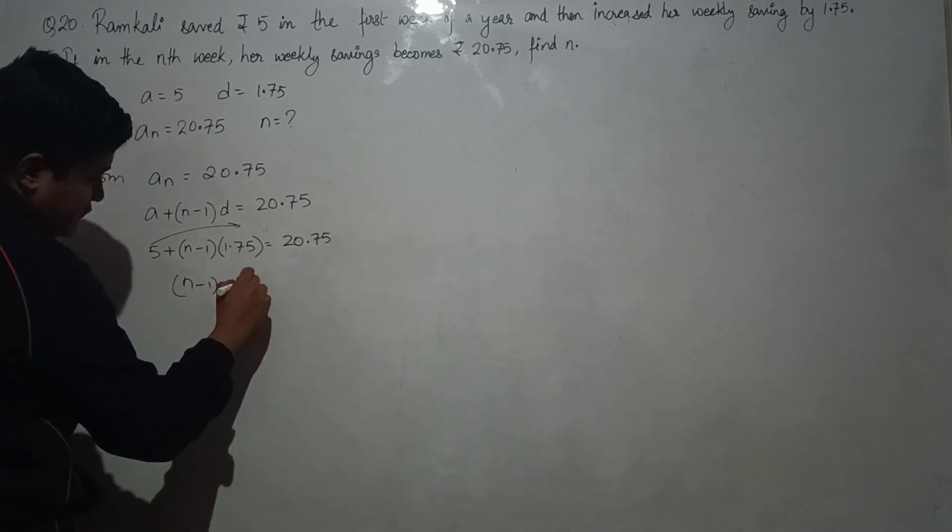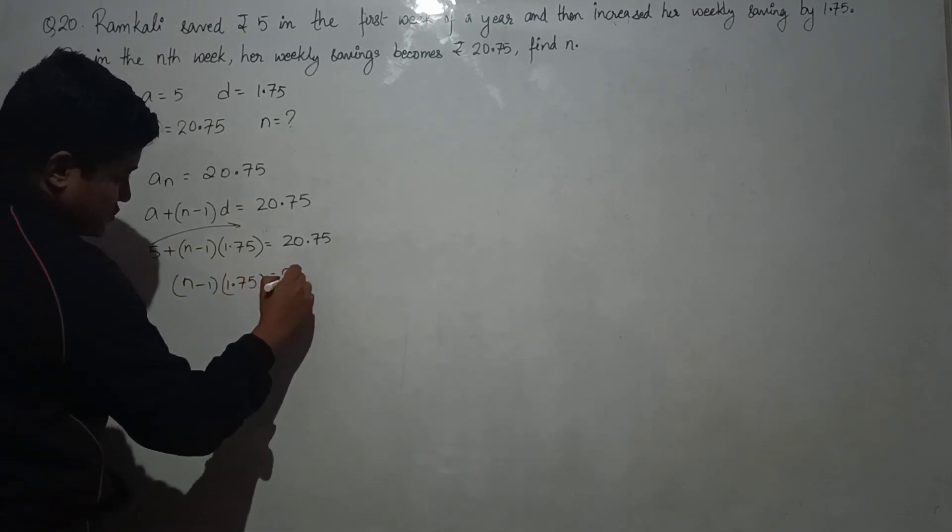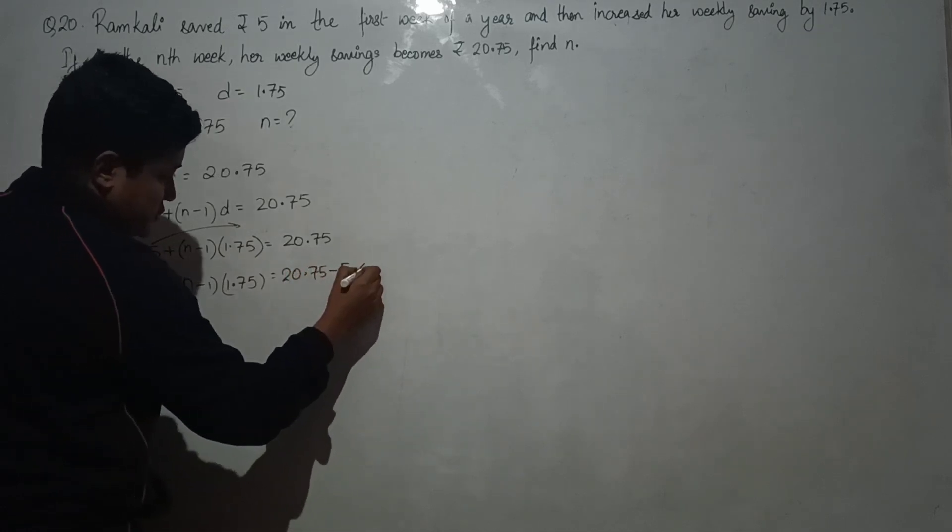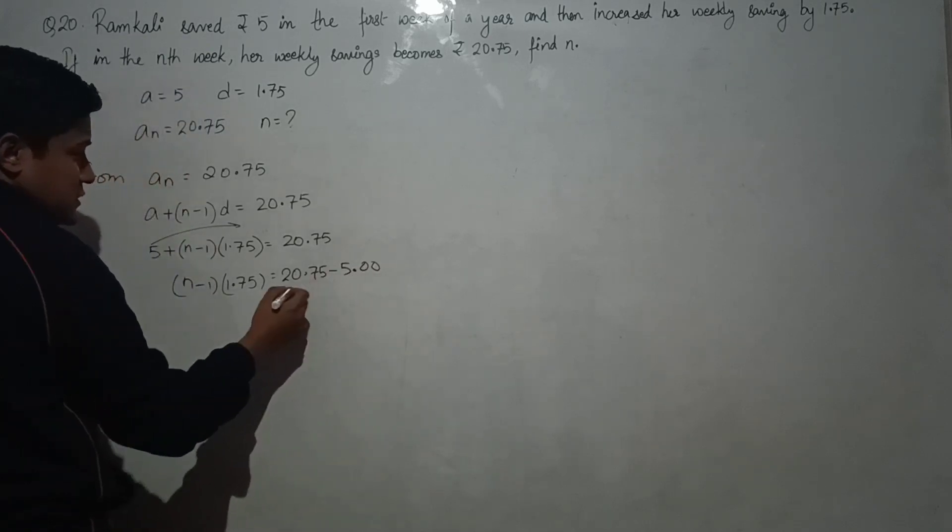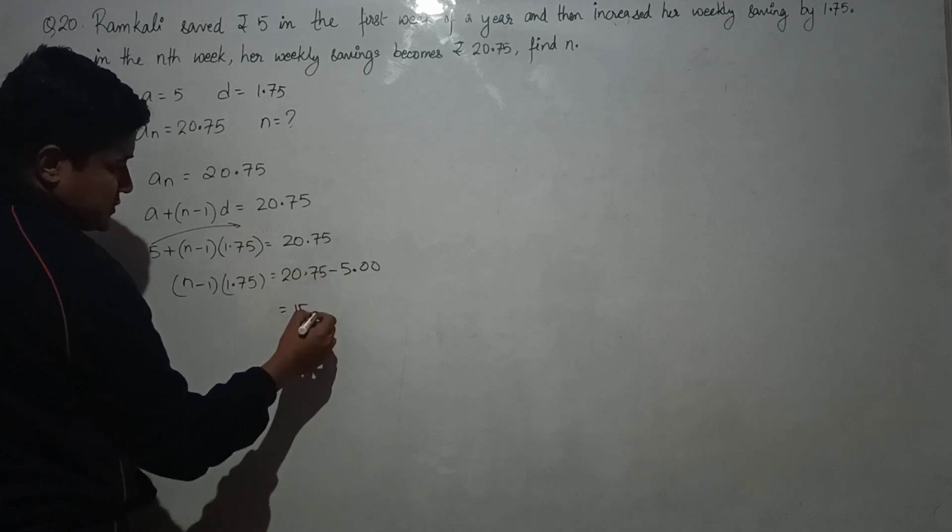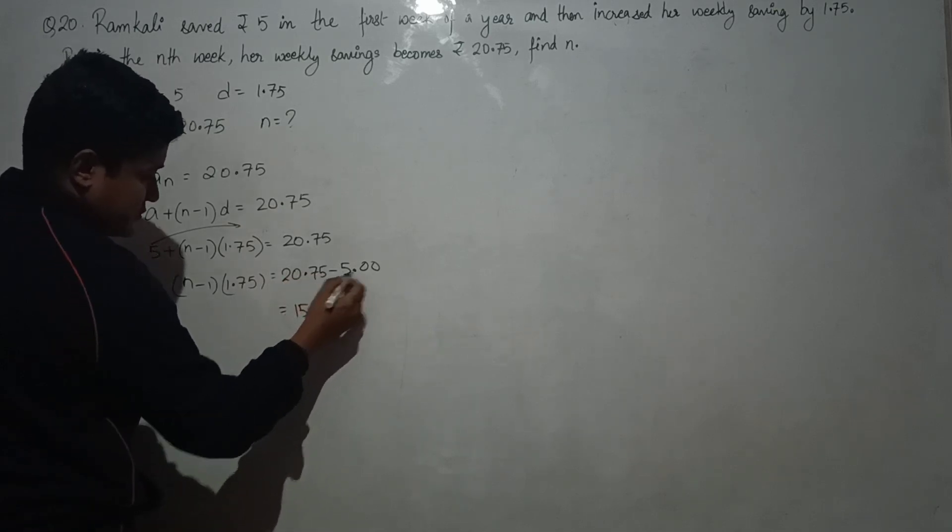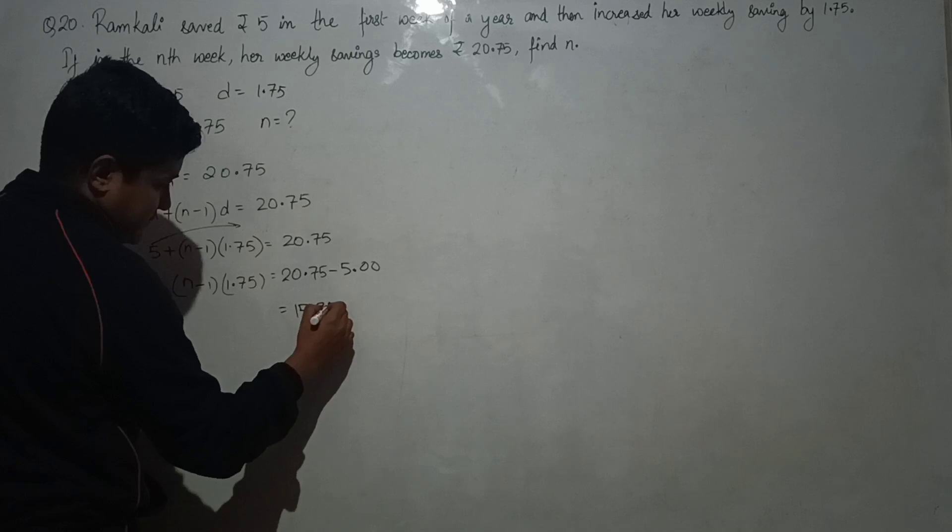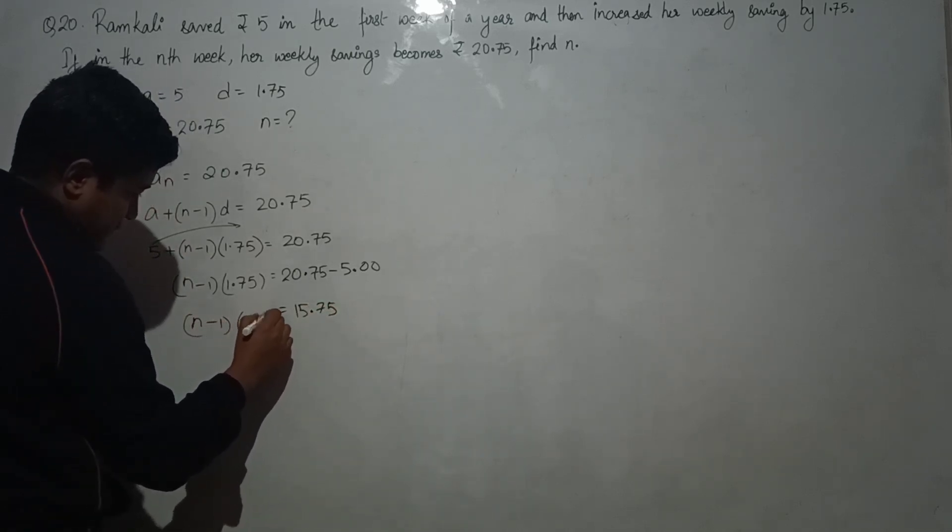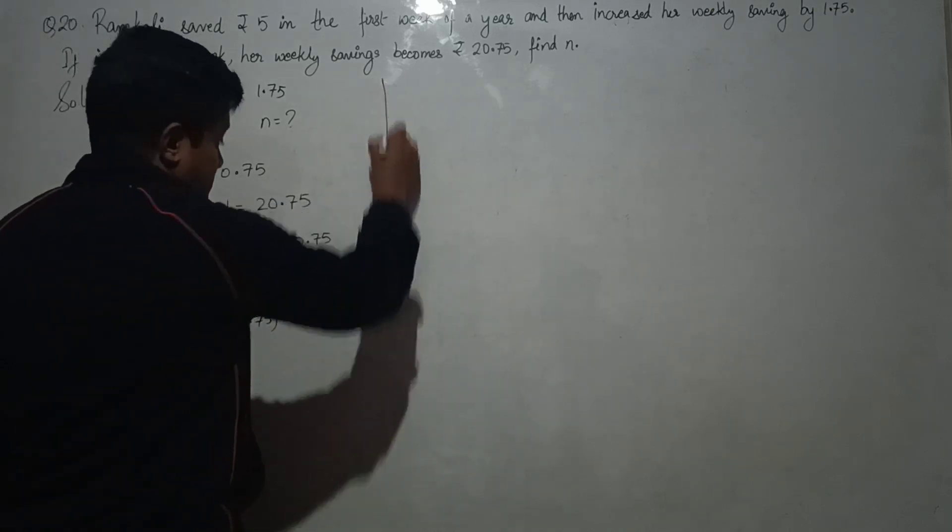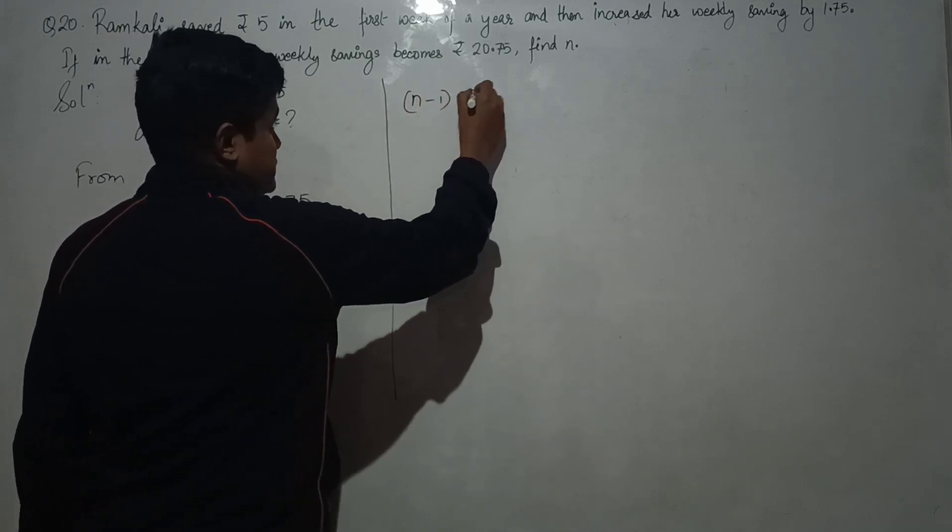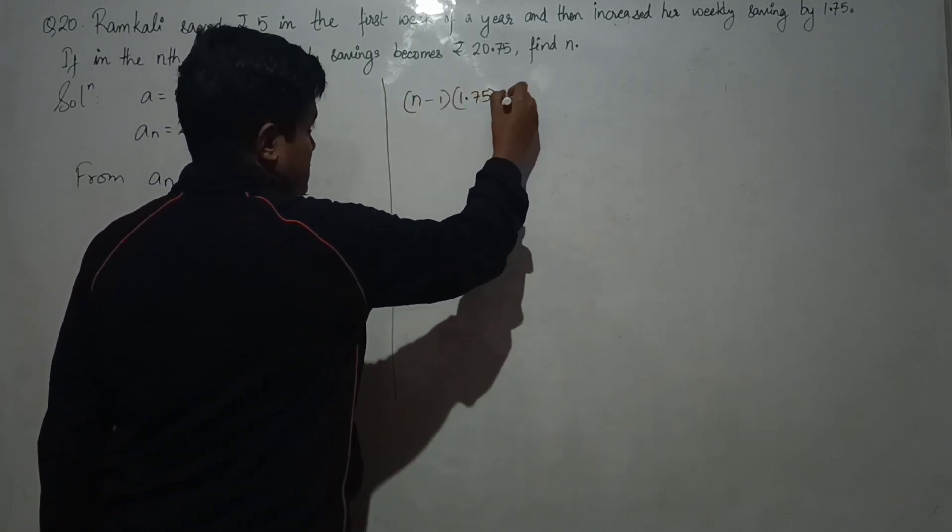20.75 minus 5 equals to (n minus 1) times 1.75. So that gives us 15.75 equals (n minus 1) times 1.75.